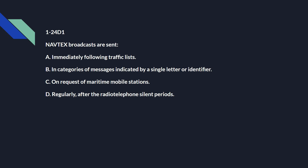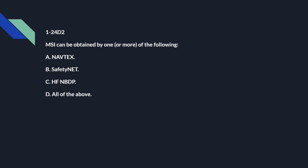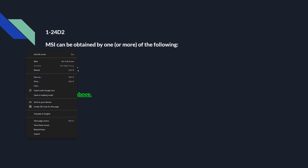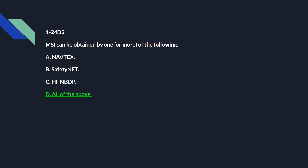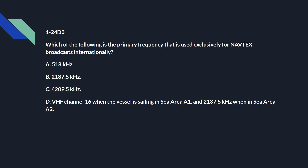1-24 Delta 1: Navtex broadcasts are sent B: in categories of messages indicated by a single letter or identifier. 1-24 Delta 2: MSI must be obtained by one or more of the following — and it's all of the above: A, Navtex; B, SafetyNET; or C, HF-NBDP. 1-24 Delta 3: Which of the following is the primary frequency used exclusively for Navtex broadcasts internationally? And that's A: 518 kHz.